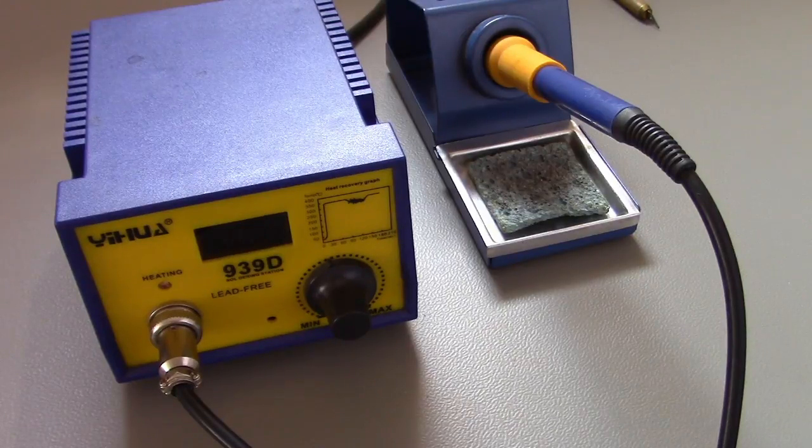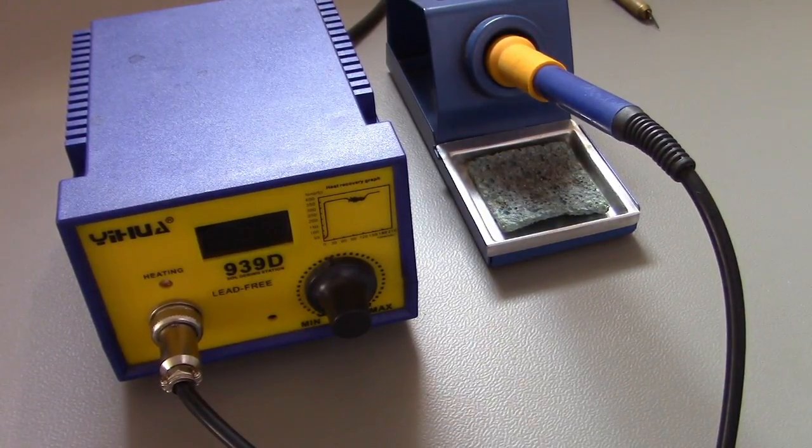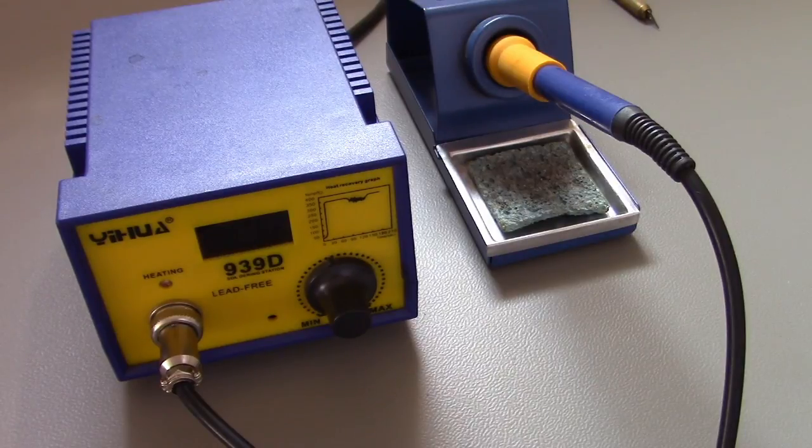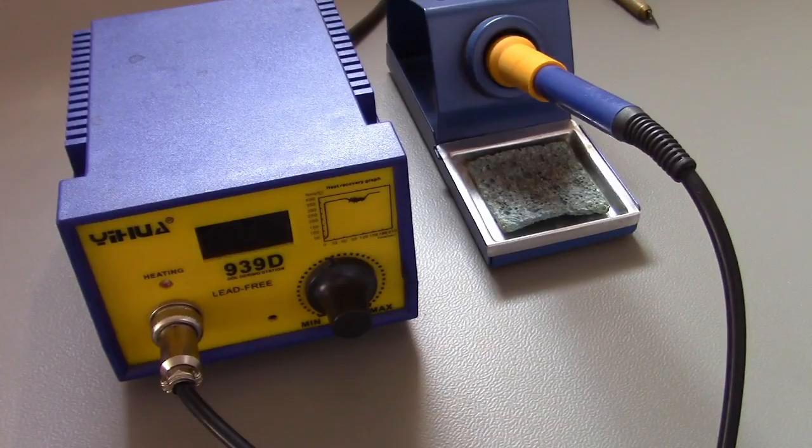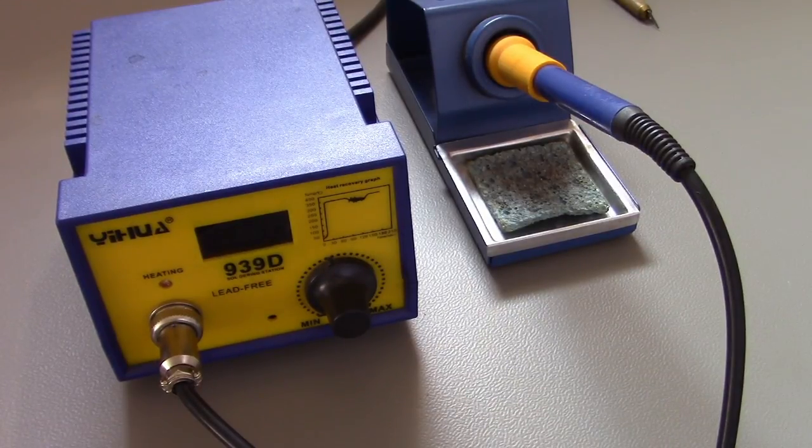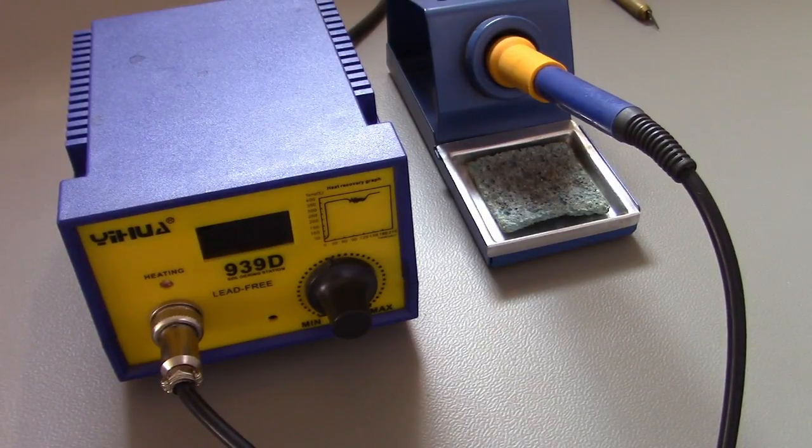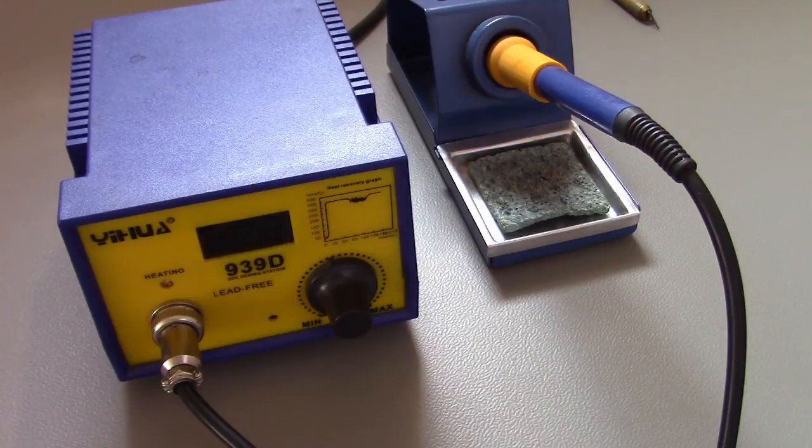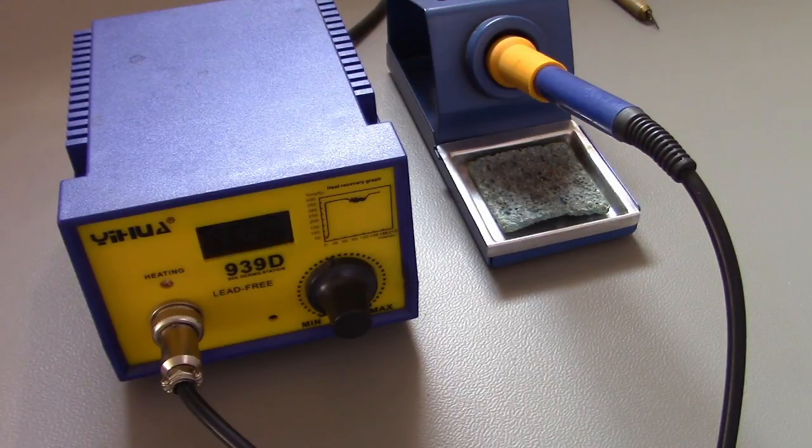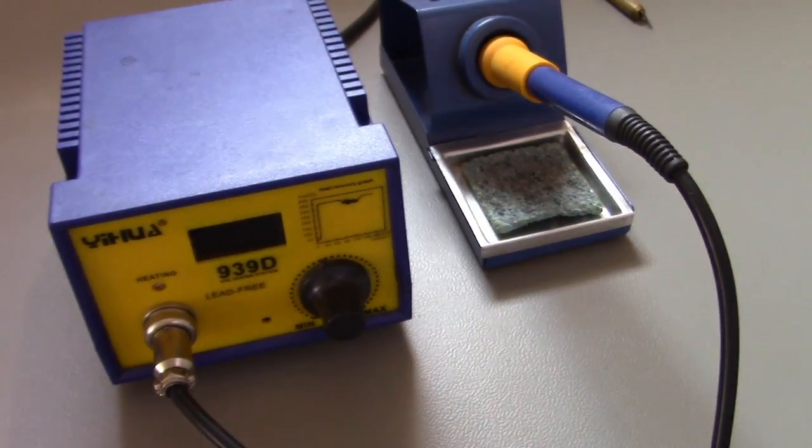So anyway, that's the Yehua 939D soldering iron station and a quick look inside it. I have also got a hot air station as well by the same company. I'm not going to bother taking it apart because I think Dave on EEVblog did actually do a full tear down of one that he had and mine is very much similar to that.